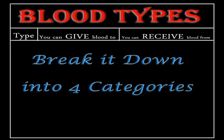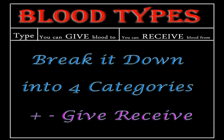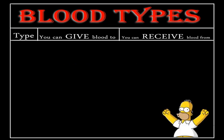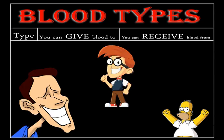You want to break it down into four different categories, and those categories are: positive, negative, blood that you give, and blood that you receive. Those are the four different types. Now when you think of positive, think of positive people. Everybody loves positive people — they actually attract other positive people, and nobody really likes to be with a negative person.